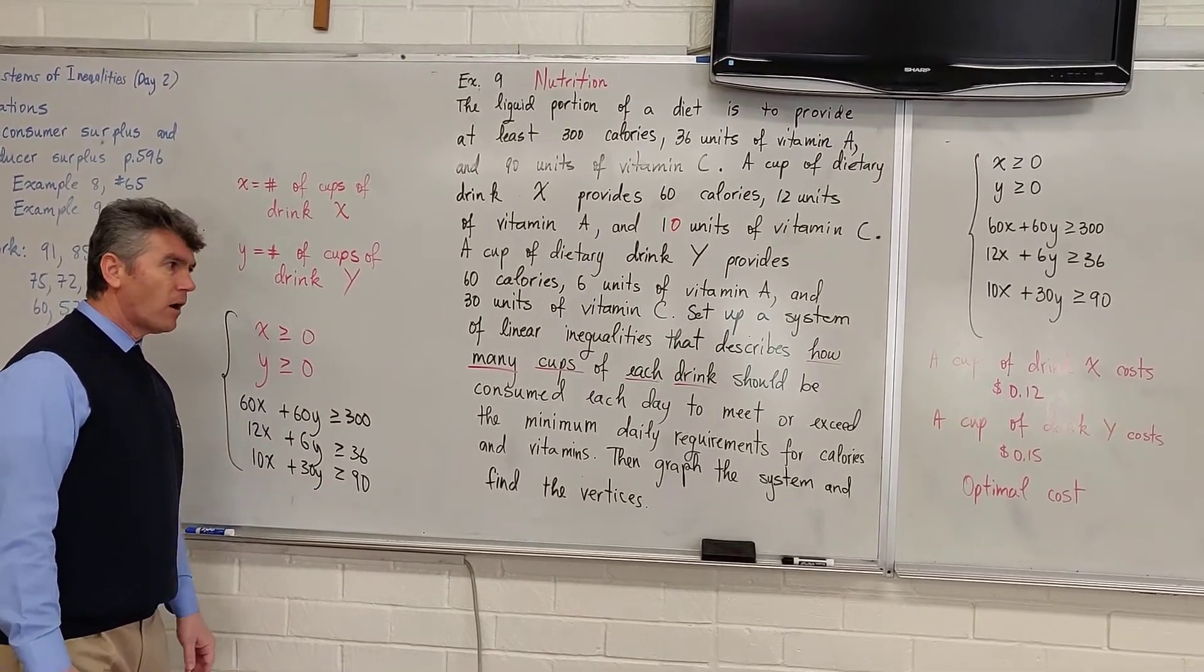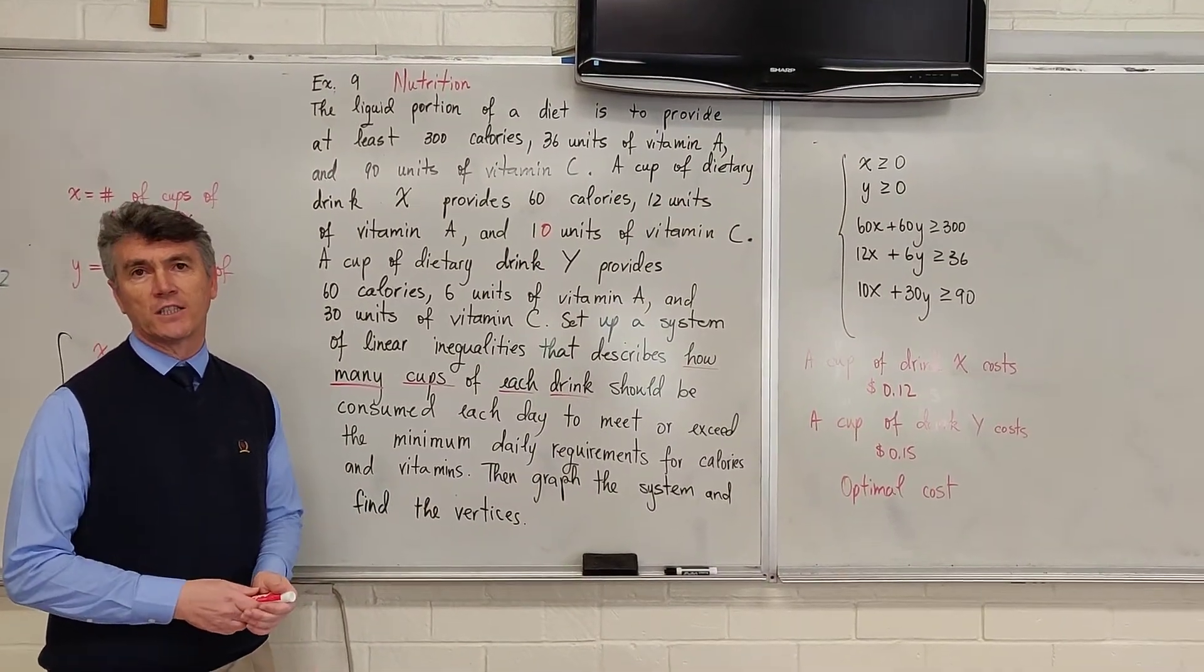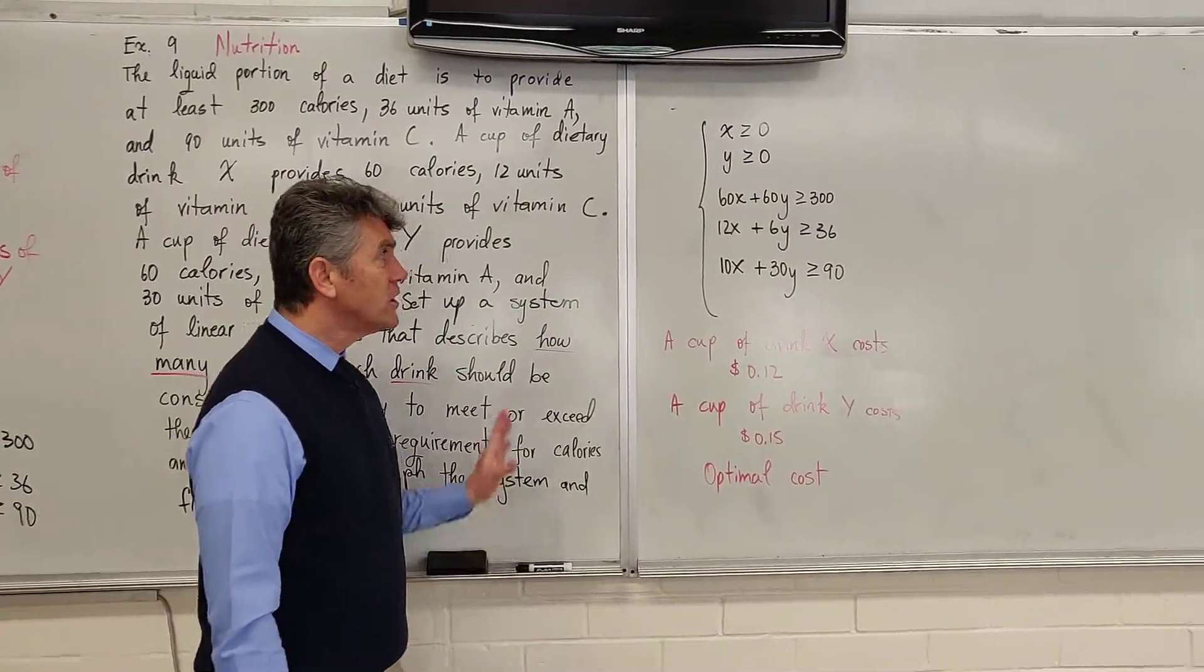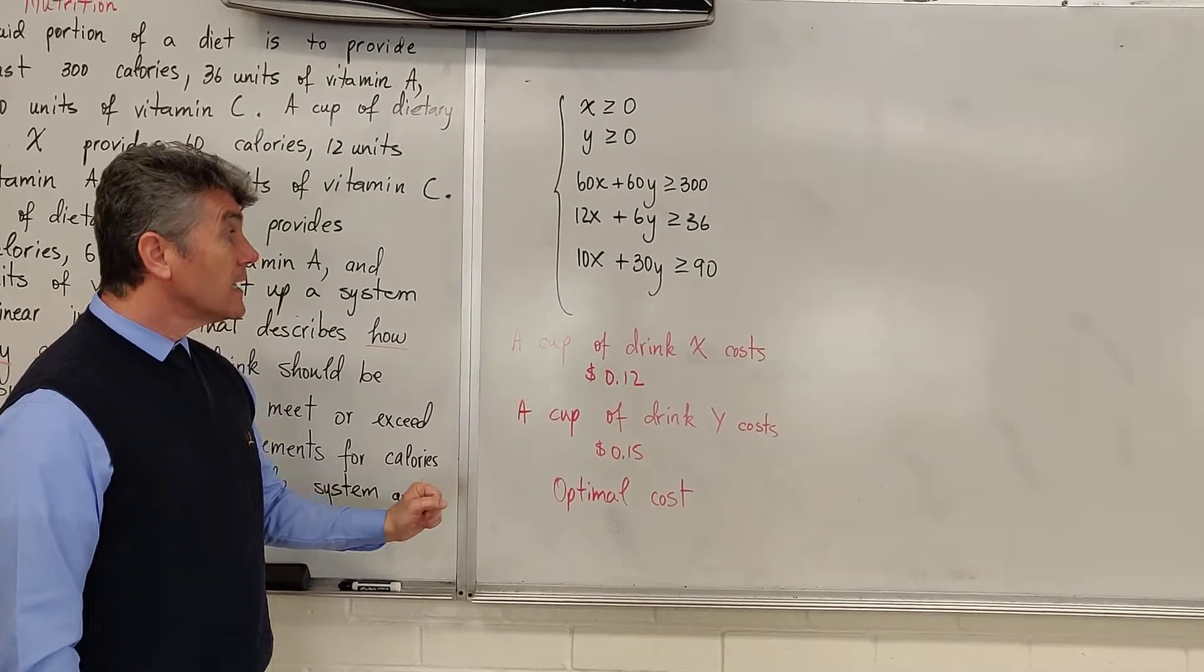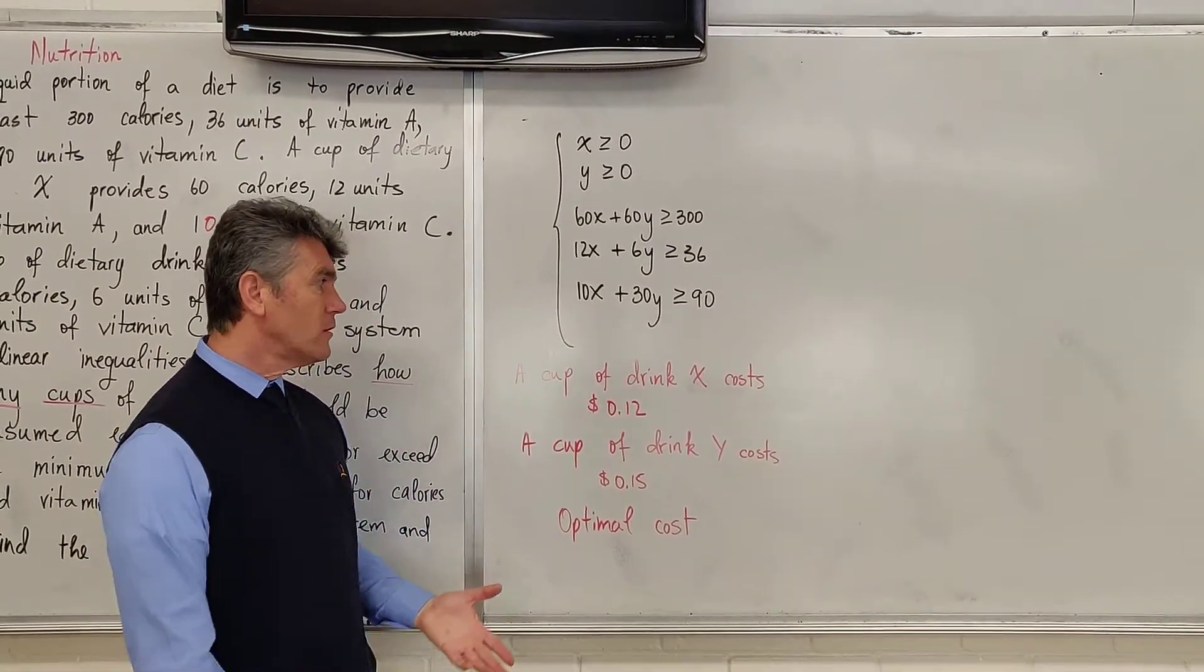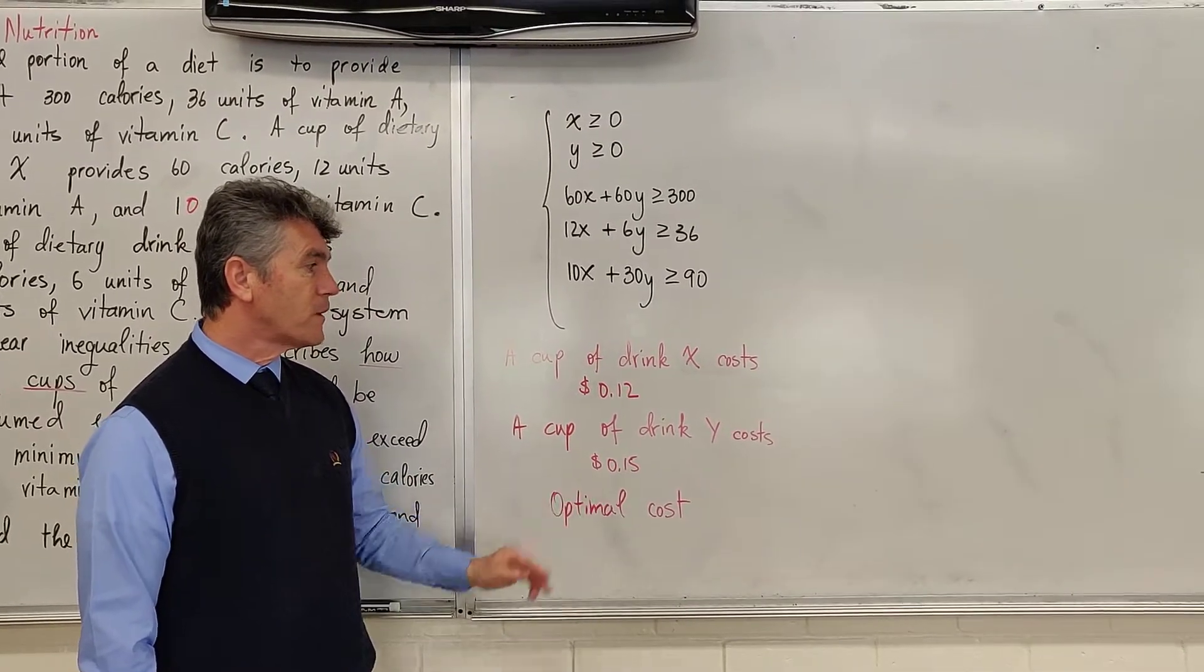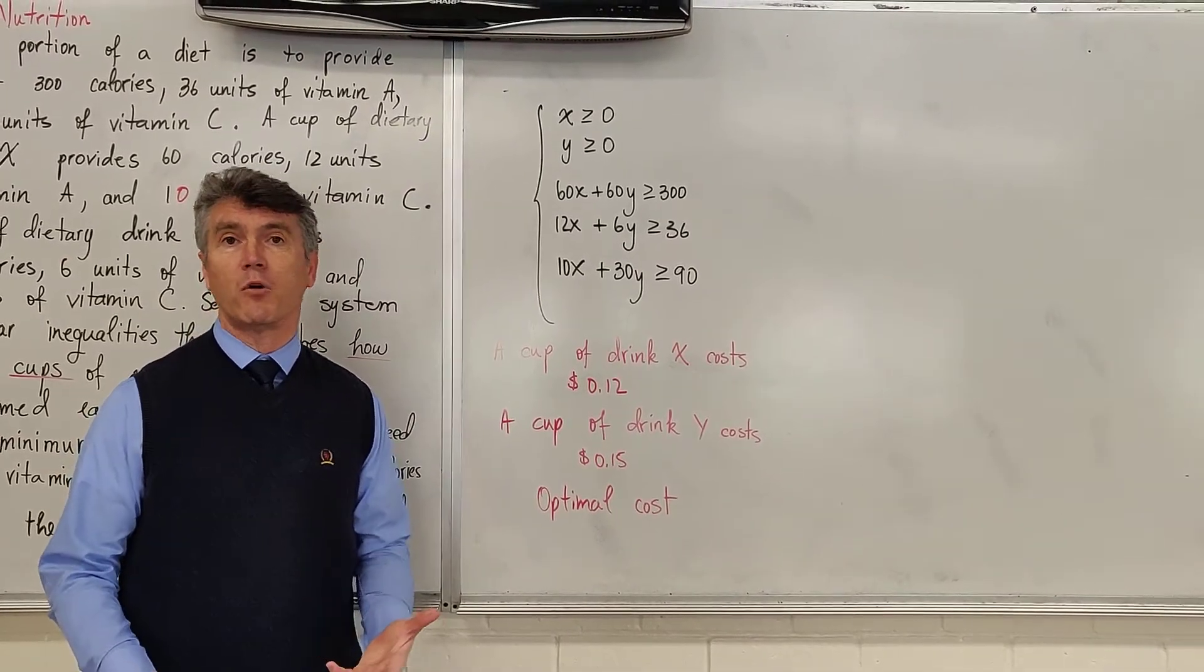The problem was pretty long, a lot of information was provided to us, and we were ready to find the system of inequalities. What you want to do next is graph the system of inequalities and find the vertices. This problem is a bridge between this lesson and the next lesson. In the next lesson, you will be given additional information. You will be told that a cup of drink x costs 12 cents, and a cup of drink y costs 15 cents.